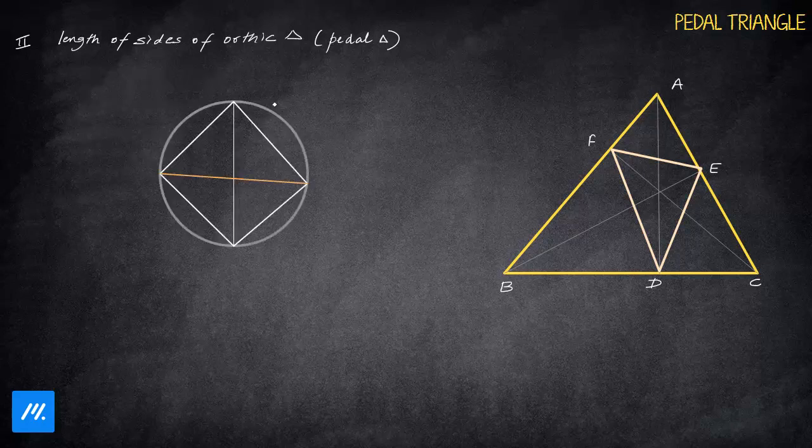So now, this is the quadrilateral that we have taken. I have taken a separate diagram for this to make sure that we can understand. So this is now H, not D. We have just taken the cyclic quadrilateral AFHE, and our target is to find FE from here.